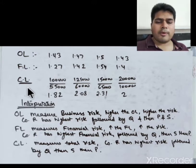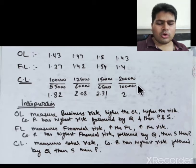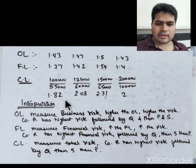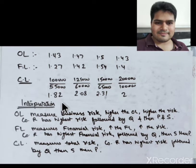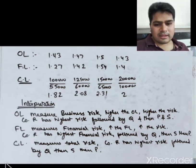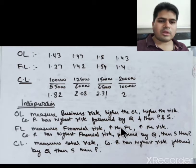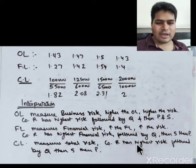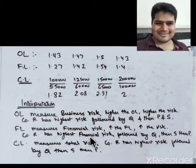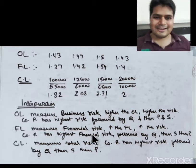Combined leverage = Contribution / EBT, or equivalently OL × FL. CL measures total risk — business plus financial risk combined. Company R has the highest total risk, followed by Q, then S. This completes question number 2.